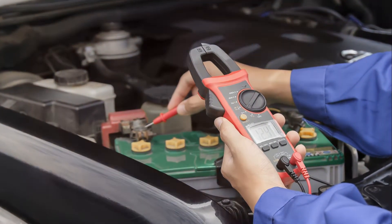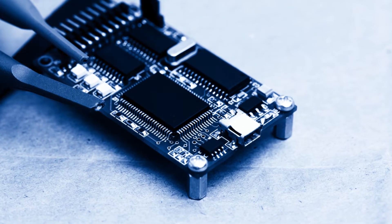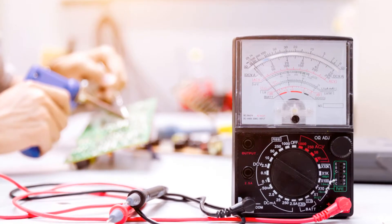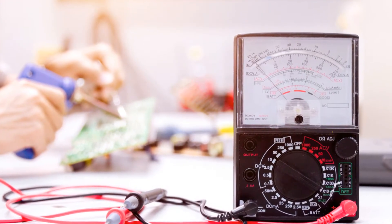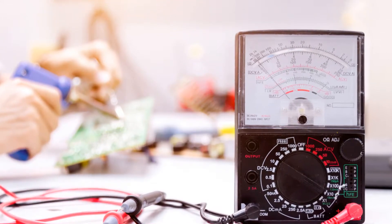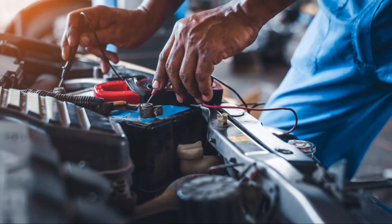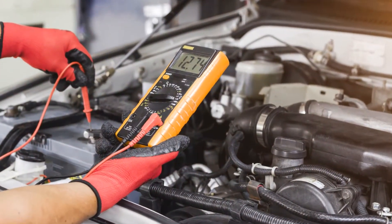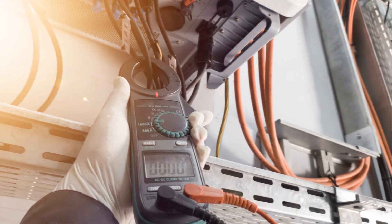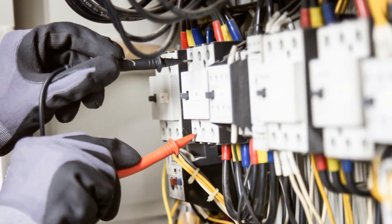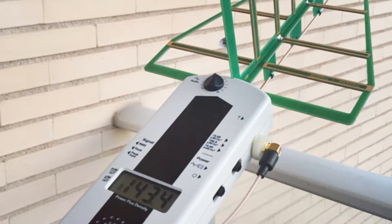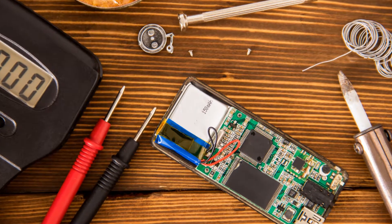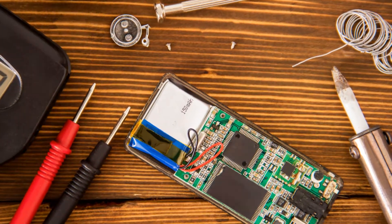Higher resistance means less current can flow through the circuit. By measuring these properties, we can diagnose and troubleshoot electrical problems. Whether you're fixing a broken circuit, designing a new one, or just curious about how things work, a multimeter is an essential tool. So grab your multimeter and start exploring the fascinating world of electronics with practice. You'll become a circuit detective solving electrical mysteries with ease.